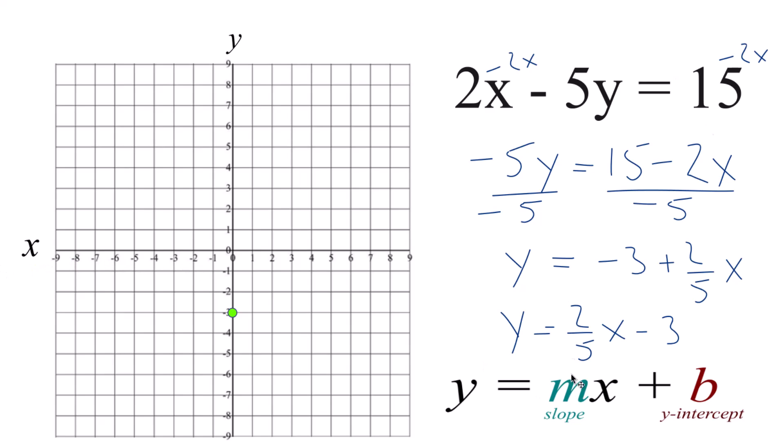From there, we're going to use the slope, the 2 fifths. The 2 is the rise, and 5 is the run.